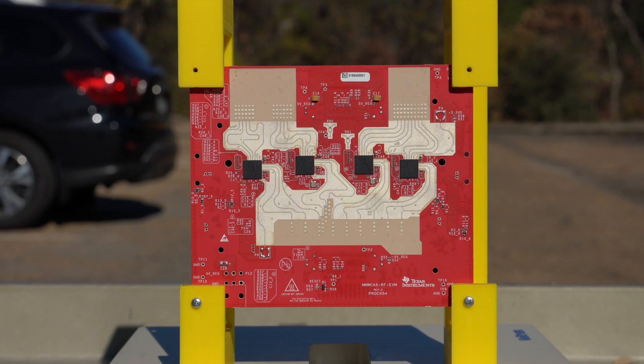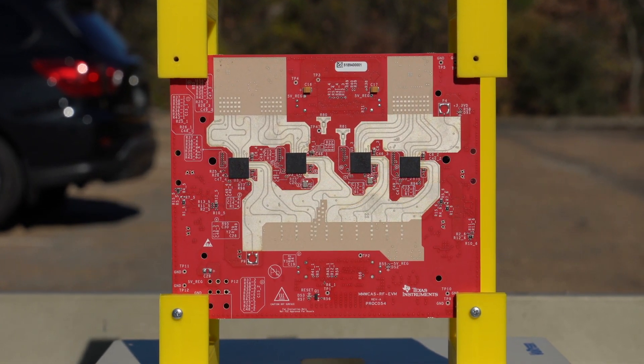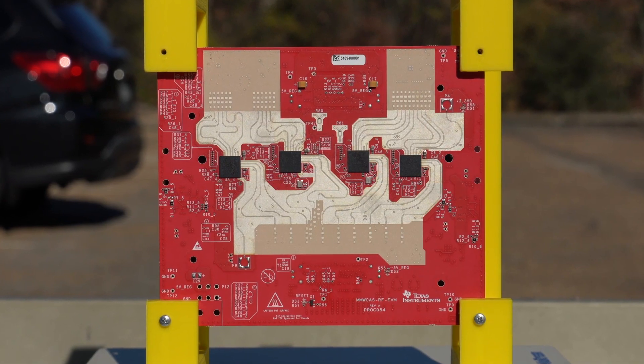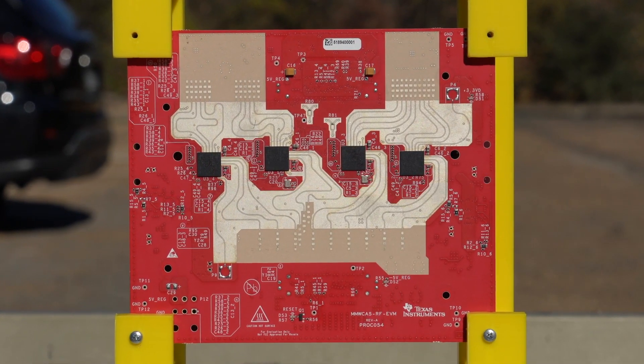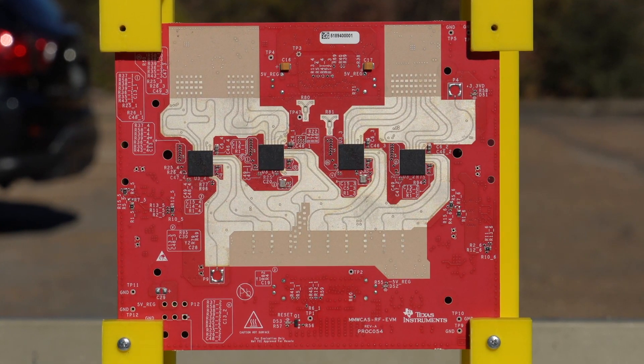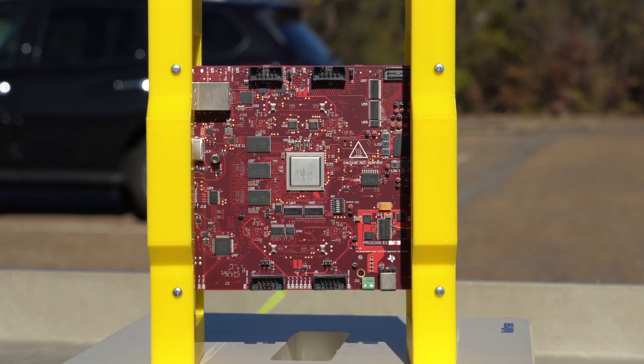The data capture and processing card is built on a high-performance Jacinto TDA2 embedded processor. The card consumes full bandwidth data from four AWR12 chips and stores this in an SSD bank. The data can be collected for up to 45 minutes of driving and can be transferred to PC over Ethernet.